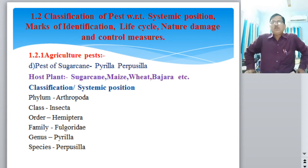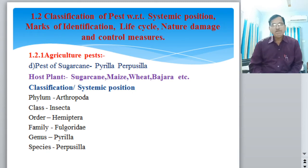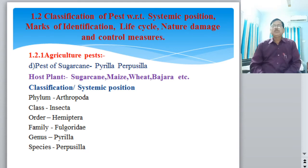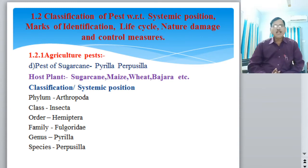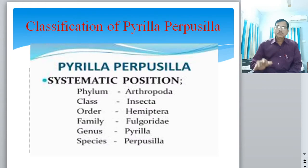Pyrilla purpurcilla is the pest of sugarcane; its host plant is mainly sugarcane, and also maize. This pest also uses secondary or alternate host plants. In classification or systematic position, this pest belongs to Phylum Arthropoda, Class Insecta, Order Hemiptera, Family Fulgoridae, Genus Pyrilla - commonly known as the sugarcane leaf hopper.